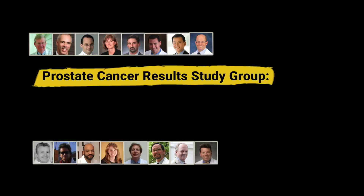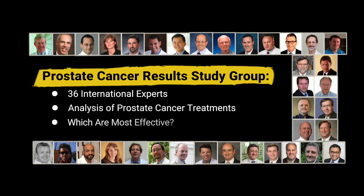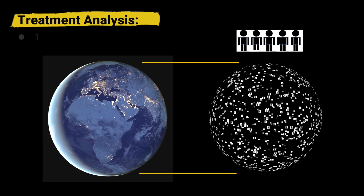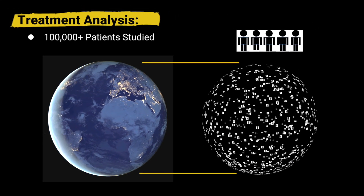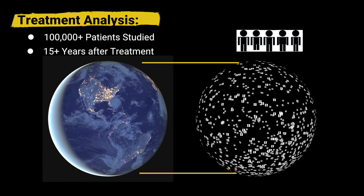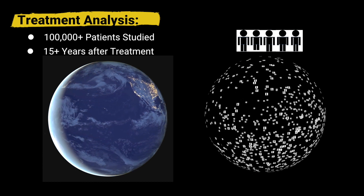The Prostate Cancer Results Study Group is a team of 36 international experts gathering data to determine which treatments are the most effective. This analysis encompasses more than 100,000 patients, tracking them for more than 15 years following treatment.